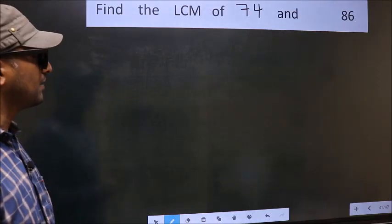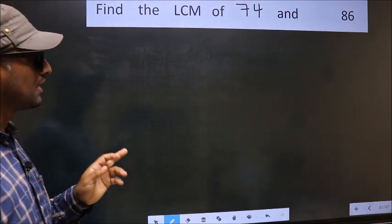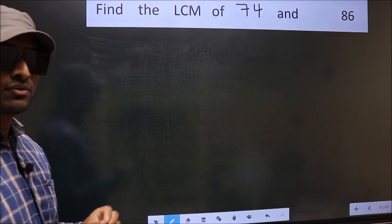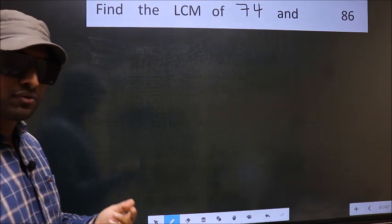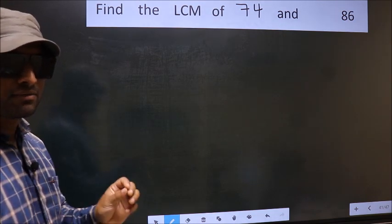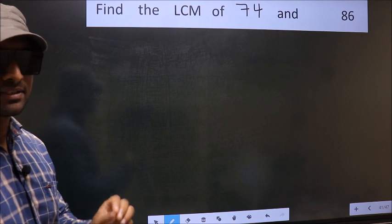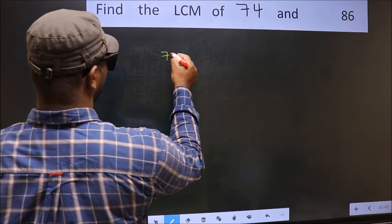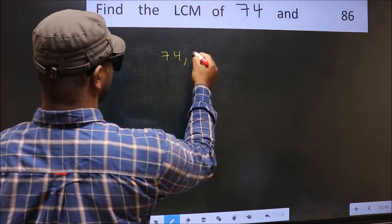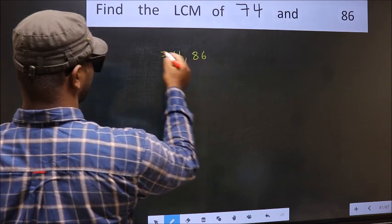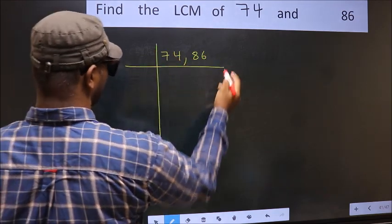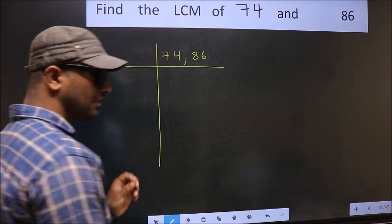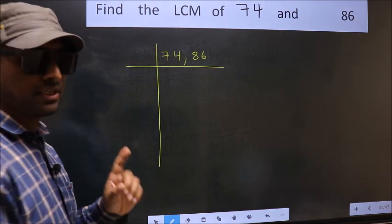Find the LCM of 74 and 86. To find the LCM, we should frame it in this way: 74 and 86. This is your step 1.